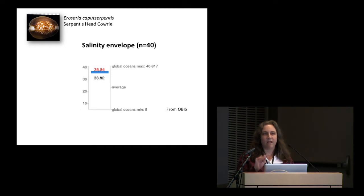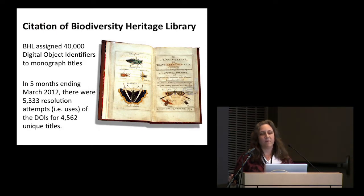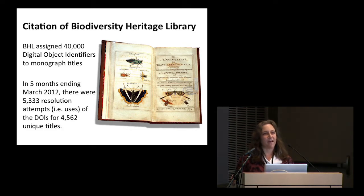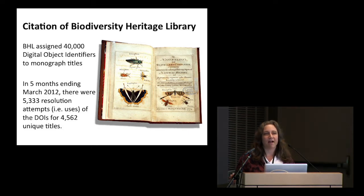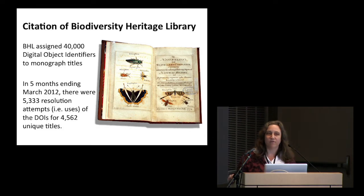That data is not currently available directly at EOL, but it's accessible through EOL. We also collaborate with the Biodiversity Heritage Library, which is in the process of scanning tens of millions of pages of out-of-copyright, primarily legacy literature about biodiversity, and linking it to EOL pages. A recent look found that just in the last five months, 10% of the monographs tagged with digital object identifiers have been used, probably for scholarly citations. So imagine if we could go into those documents and pull out the data and use it for science.